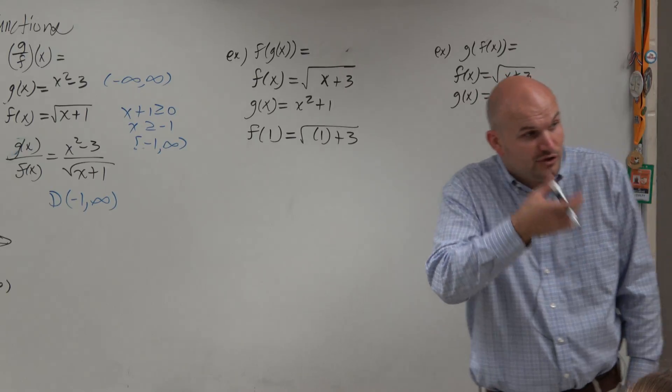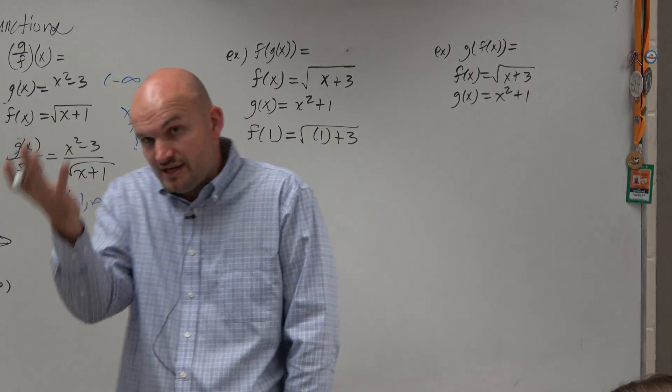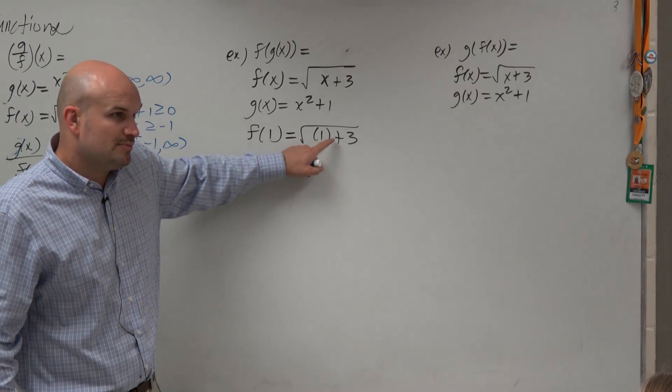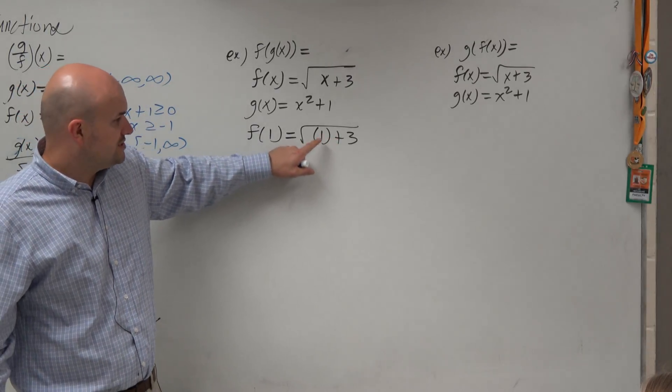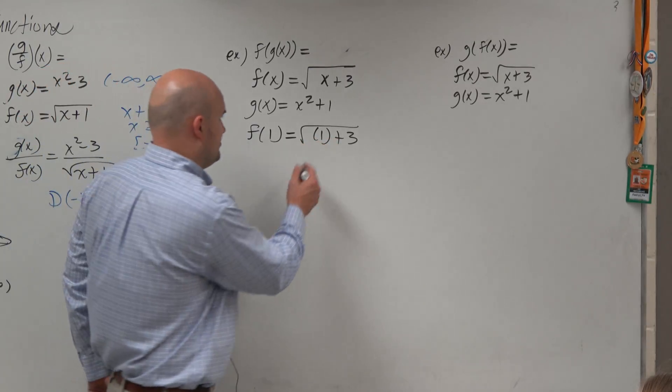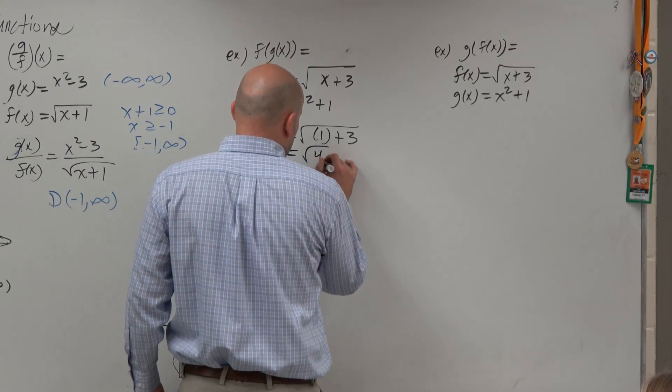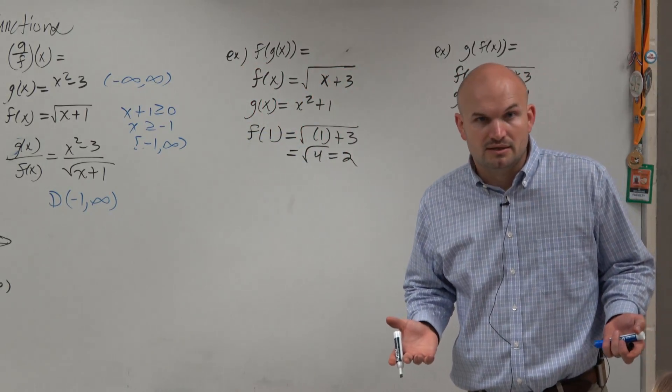You have function notation with the input, and whatever you plug in for that input in the notation, you replace your input variable with that. So f of square root of 1 plus 3, that's square root of 4, which equals 2. Correct?